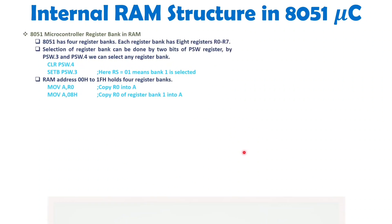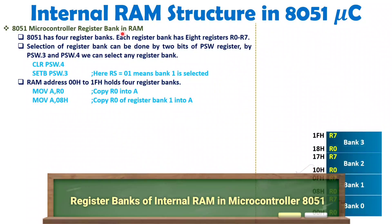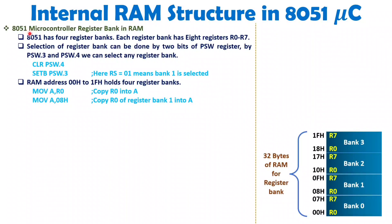The register bank area of the 8051 RAM contains four register banks: Bank 0, Bank 1, Bank 2, and Bank 3. Each register bank has 8 registers, R0 to R7. Bank 0 has addresses 00h to 07h, Bank 1 from 08h to 0Fh, Bank 2 from 10h to 17h, and Bank 3 from 18h to 1Fh — 32 bytes in total.